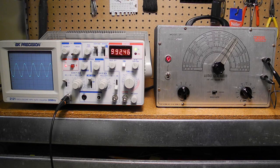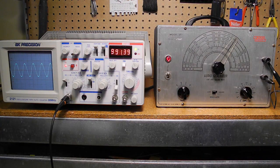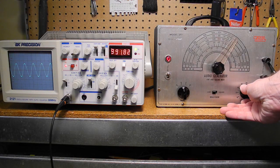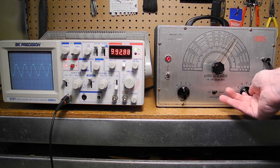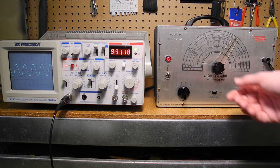We can see an approximately 1 kHz sine wave on the scope. The level control adjusts the output level, about 10 volts RMS at maximum. Changing the frequency, you can observe it change on the scope.